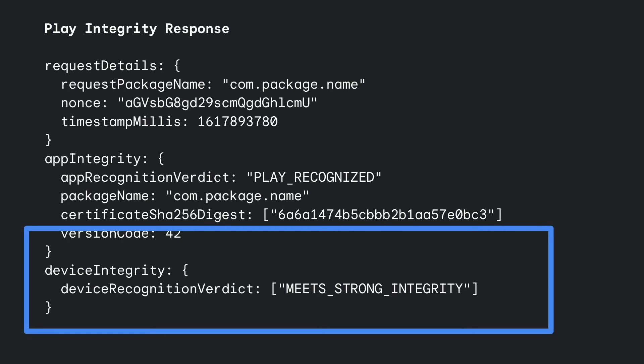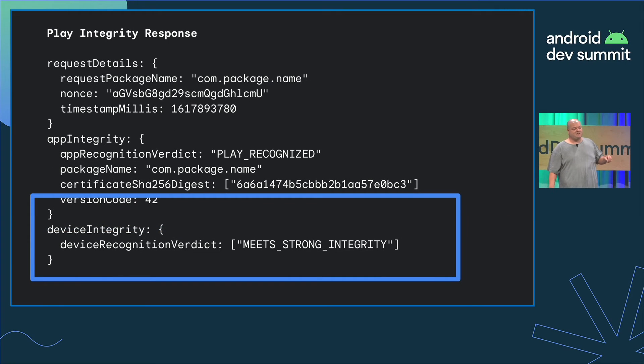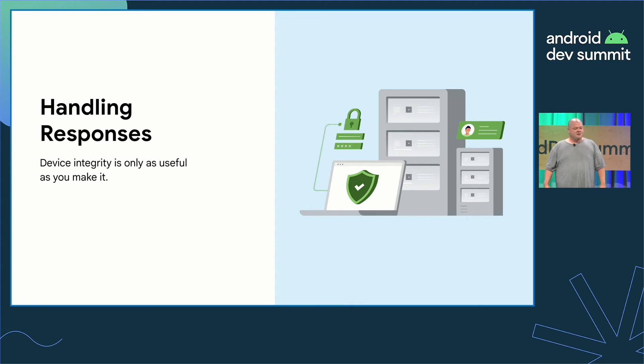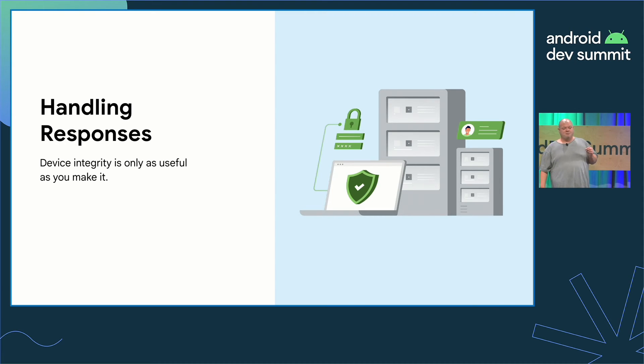Meets strong integrity means the app is running on an Android device powered by Google Play services and has a strong guarantee of system integrity, such as hardware-backed proof of boot integrity. The device also passes system integrity checks and meets Android's compatibility requirements. Other possible results for emulators or unlocked devices are meets basic integrity or meets virtual integrity. Play Integrity API simplifies the response, allowing you as the developer to focus on preventing access to your service based on the results.